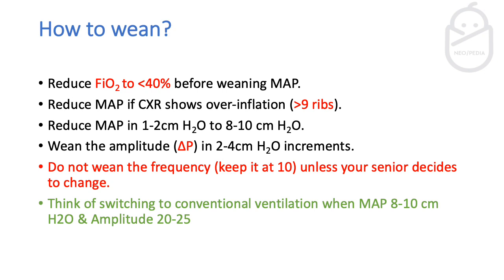When weaning, start by weaning oxygen first due to the harmful effects of high oxygen concentration — such as retinopathy of prematurity. Reduce FiO2 first, and once you reach 40% or less, you can start weaning the MAP. Wean MAP in steps of one to two centimeters of water. Getting down to a MAP of 8 to 10 is a good target as it's the next step before weaning to conventional ventilation or extubation. If the chest X-ray shows over-inflation beyond 9 ribs, reduce MAP as well.